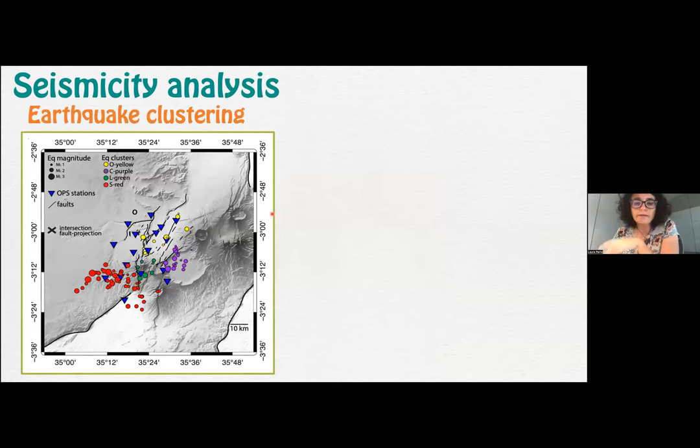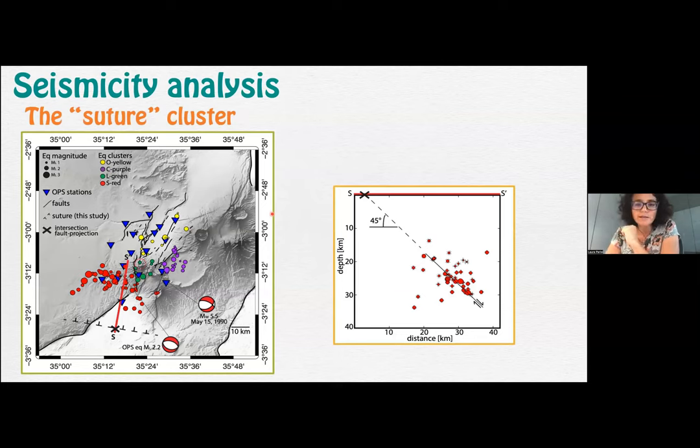To identify the active faults, we studied the distribution of the earthquakes and grouped them in four different clusters shown with different colors. The red cluster includes most of the seismicity recorded during our experiment. When we projected the seismicity along this line, the seismicity aligns along a feature that dips 45 degrees. The depth distribution is between 15 and 30 kilometers depth. However, it's possible that more earthquakes are occurring in the shallower part of this fault, but we cannot locate them because of the limited extension of our seismic network.